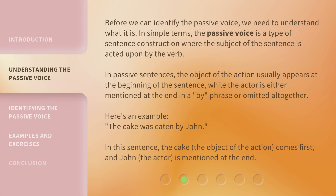Before we can identify the passive voice, we need to understand what it is. In simple terms, the passive voice is a type of sentence construction where the subject of the sentence is acted upon by the verb. In passive sentences, the object of the action usually appears at the beginning of the sentence, while the actor is either mentioned at the end in a 'by' phrase, or omitted altogether.